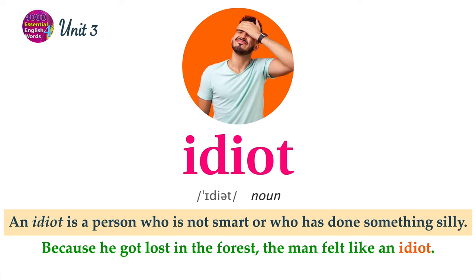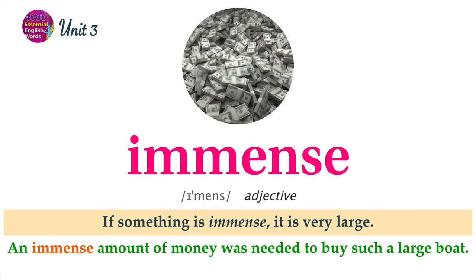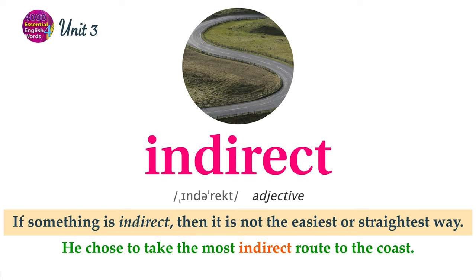An idiot is a person who is not smart or who has done something silly. Because he got lost in the forest, the man felt like an idiot. If something is immense, it is very large. An immense amount of money was needed to buy such a large boat. If something is indirect, then it is not the easiest or straightest way. He chose to take the most indirect route to the coast.